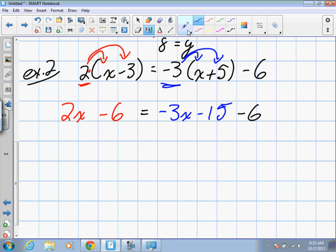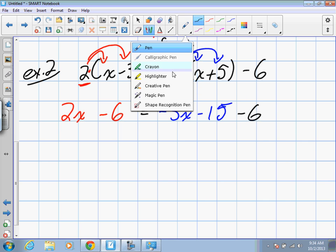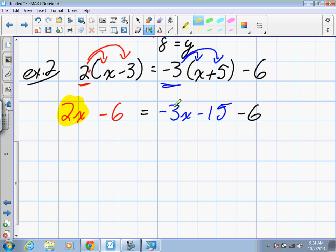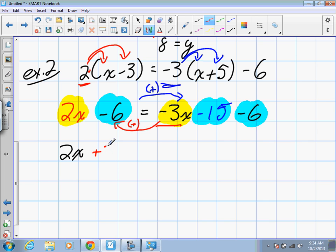This time I'm going to work with variables on the left. So my like terms are 2x and negative 3x, and our other like terms are negative 6, negative 15, and negative 6. I want to move all my variables to the left. So our negative 3x, when I move it to the left, what does it become? Positive 3x. And I need to move all my constants to the right. So my negative 6, when I move it to the right, it becomes positive 6. So our new line will read 2x plus 3x is equal to negative 15 minus 6. And then what does this negative 6 become? Positive 6.